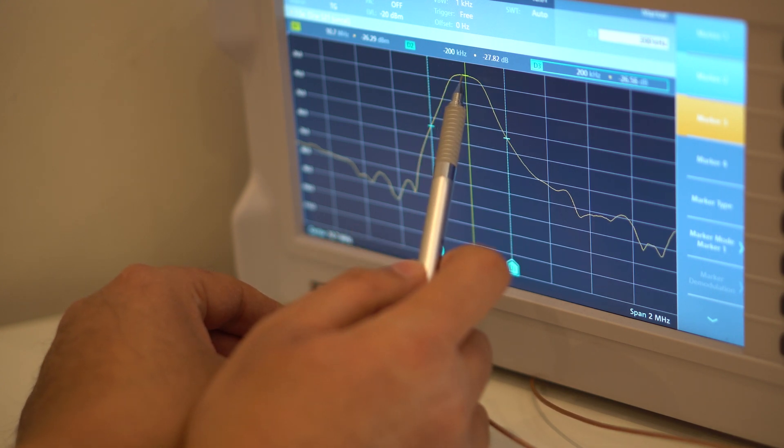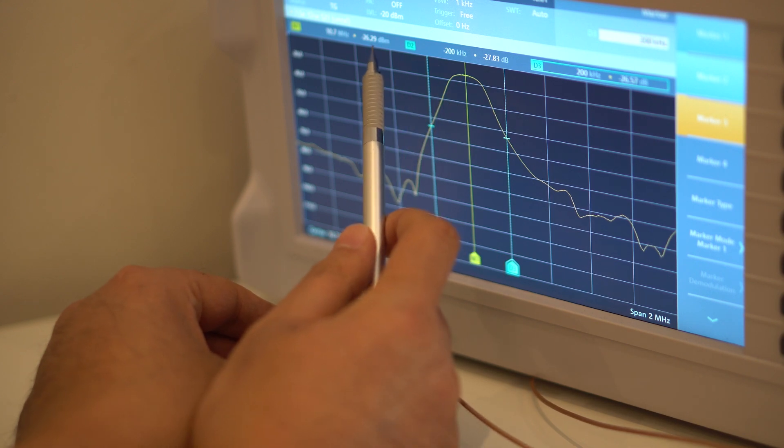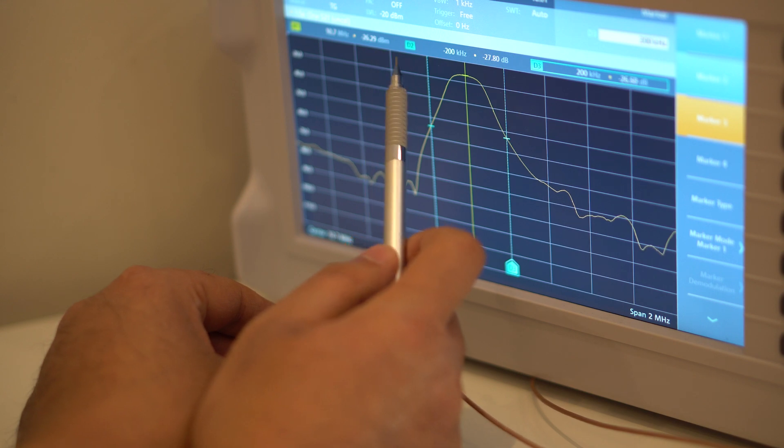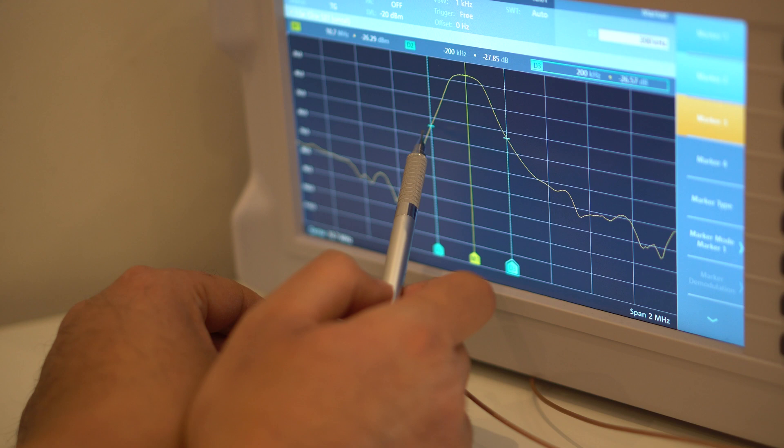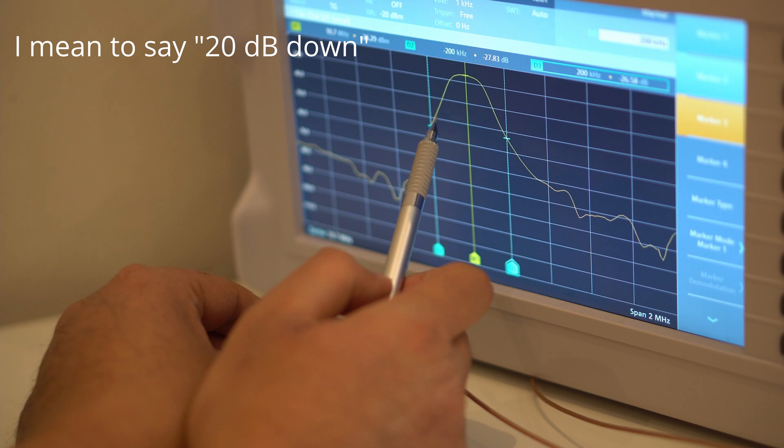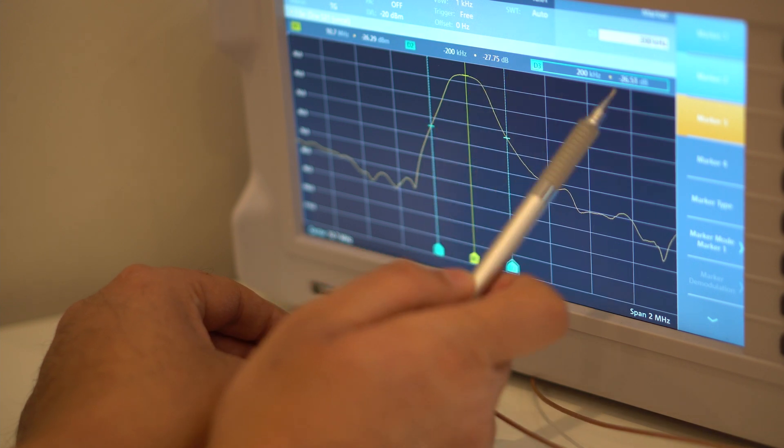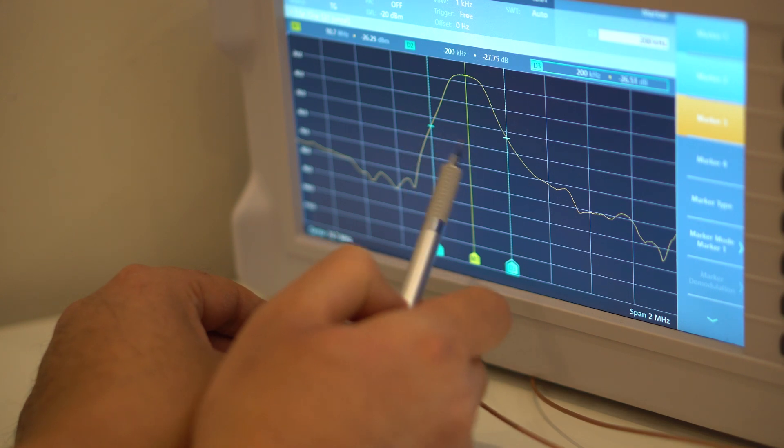the tracking generator is set to minus 20 dBm. And that level there, exactly at 10.7 MHz, is minus 26.29 dBm. So that's a difference of an insertion loss of 6.3 dBm. And that's well within the specification of 5.5 plus or minus 2 dBm, is what the datasheet for that ceramic filter says. And also, according to the datasheet, at plus and minus 200 kHz from there, the level should be at least 20 dBm down. And it's more than that, it's minus 27 and minus 26.5 dB down. So that's correct too.